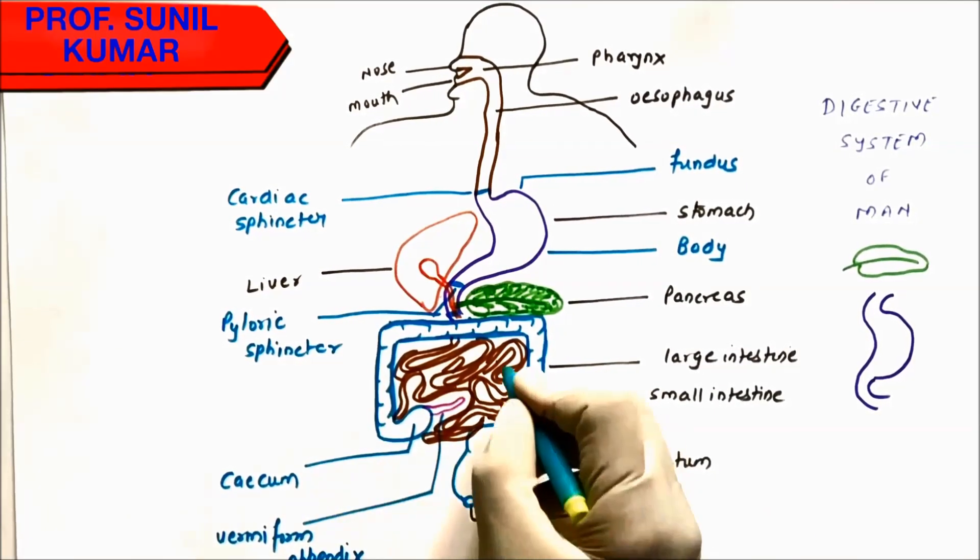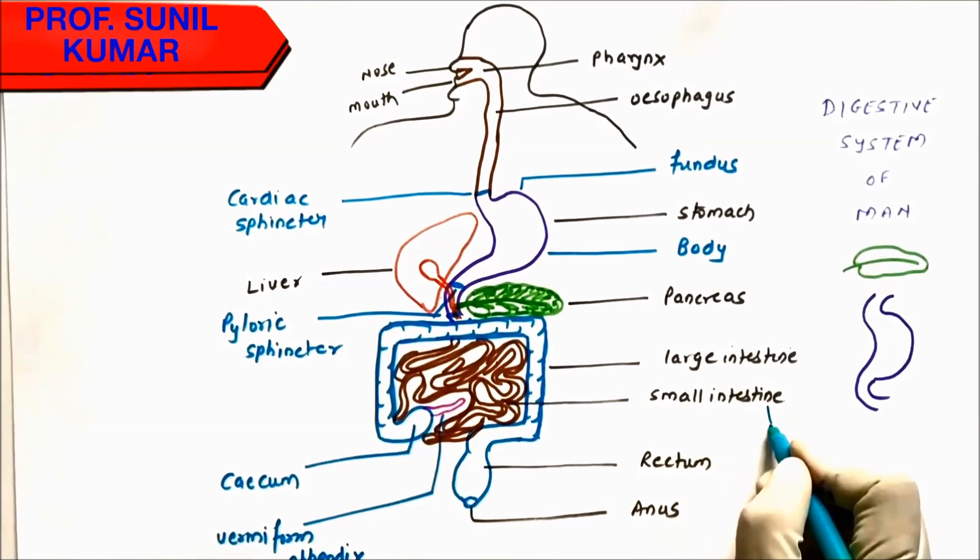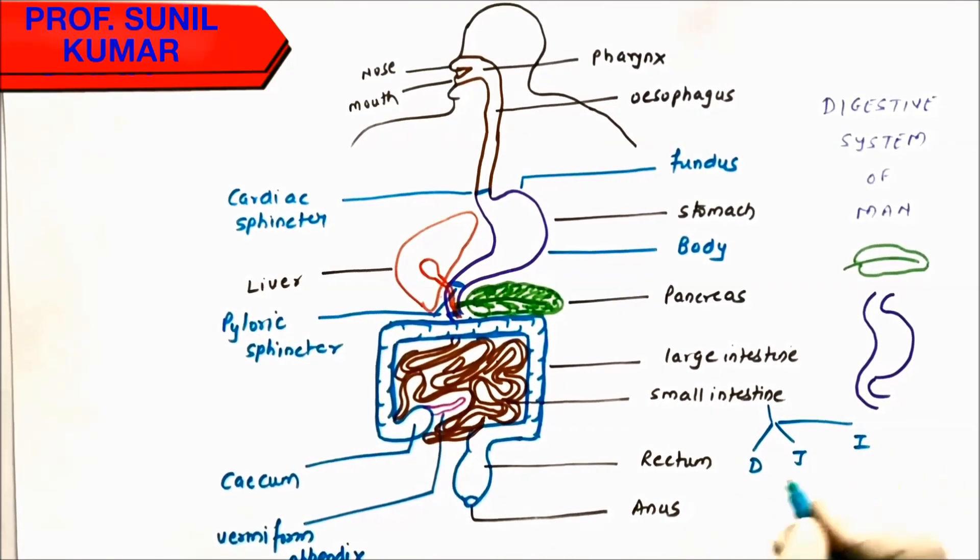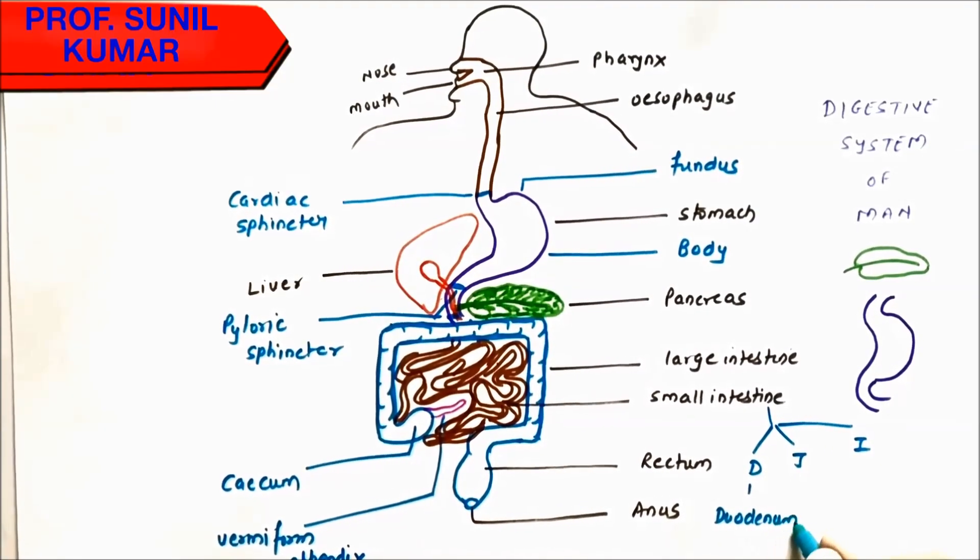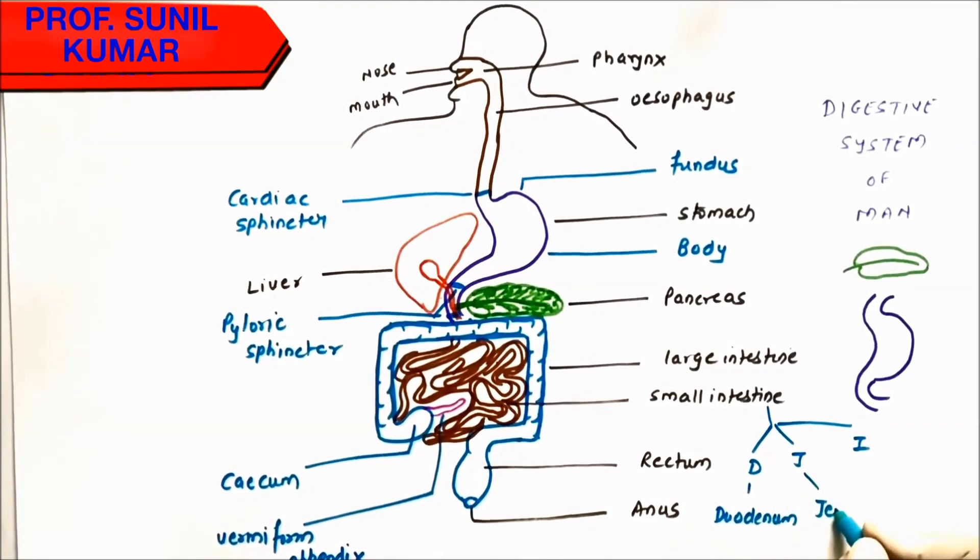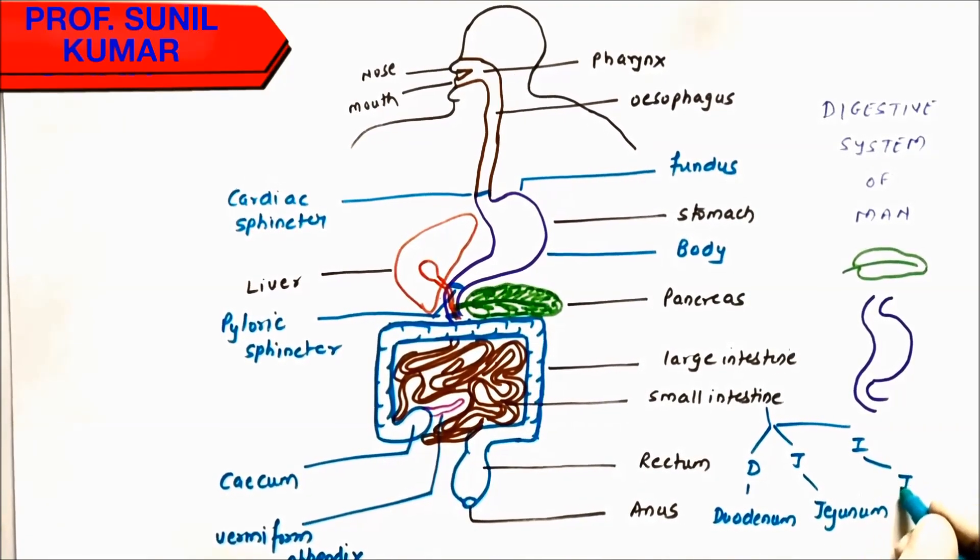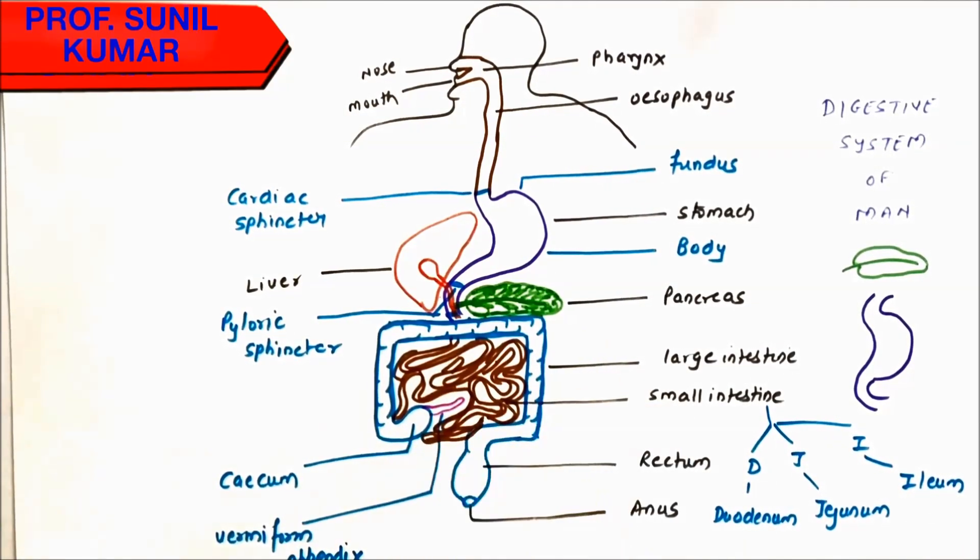The small intestine is basically divided into three parts, so we call it DJI. D for duodenum—stomach and small intestine are connected at the duodenum, 25 centimeters. Then we have jejunum, 3.5 meters, and we have ileum, which is 2.5 meters. The small intestine has finger-like projections called villi. It helps in the absorption of food.